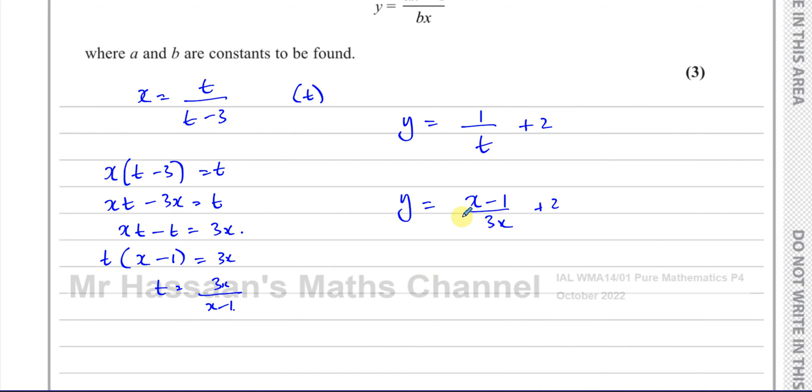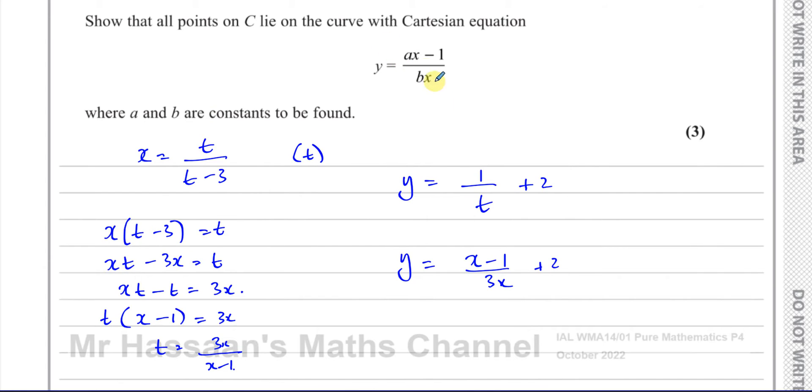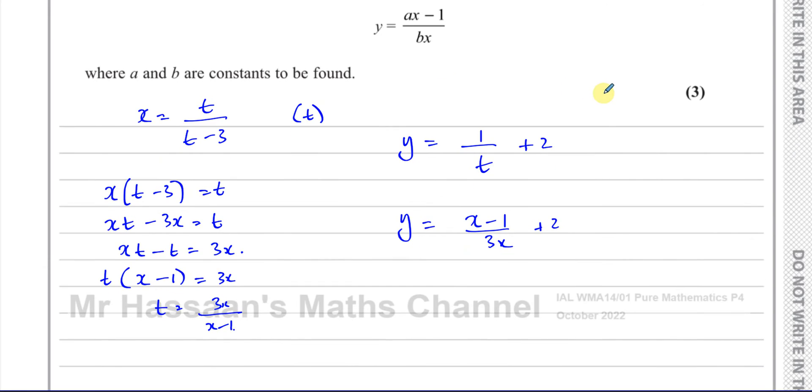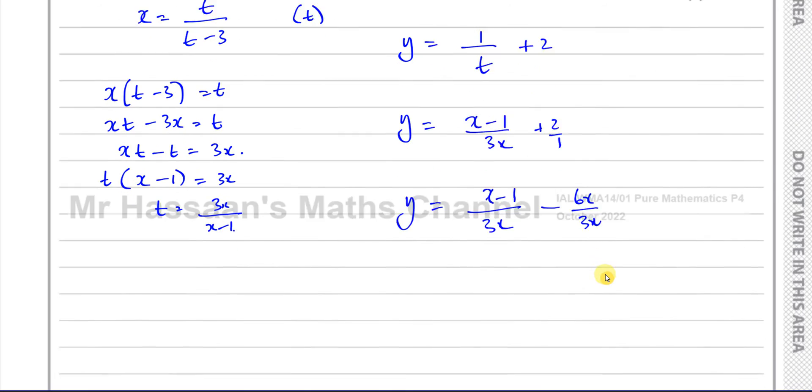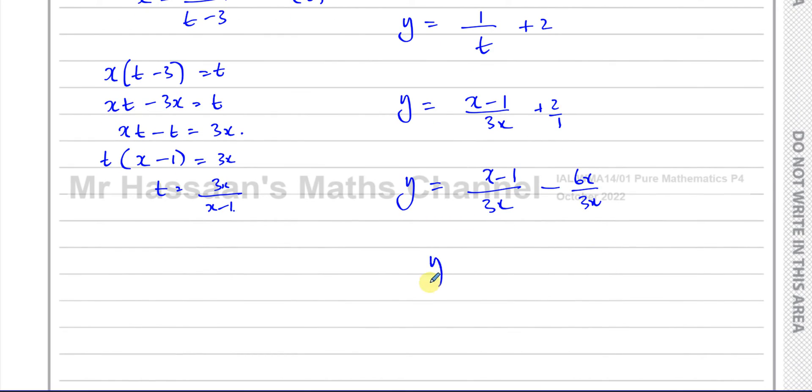So now I want to write it in this form, so you see we want it as one fraction. So what I'm going to do is write this as one fraction. I'll add these two fractions together, so this is like 2 over 1. So you have x minus 1 over 3x. If I make this denominator the same as that, that has to become 3x, which means I have to multiply this by 3x, so that becomes 3x times 2, which is 6x.